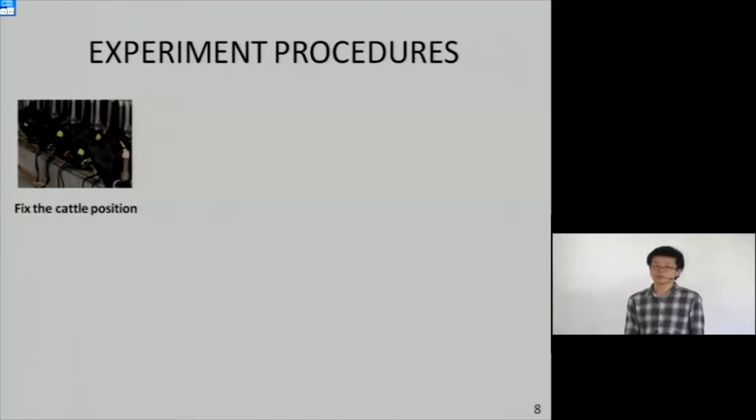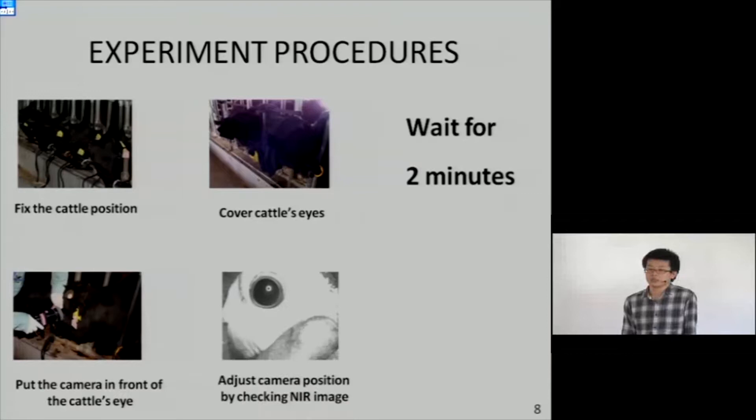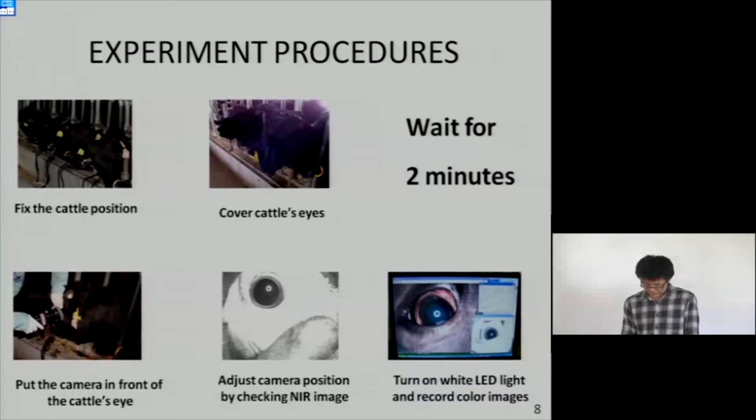The experiment procedure is shown here. First, we fix the cattle's position, then cover the cattle's eye with black cloth. We wait for two minutes for the dilation of the pupil. Then we put the camera in front of the cattle's eye and adjust the position by checking the near-infrared image. At this time, the pupil will not shrink. Then we turn on the white LED light and record the color images.